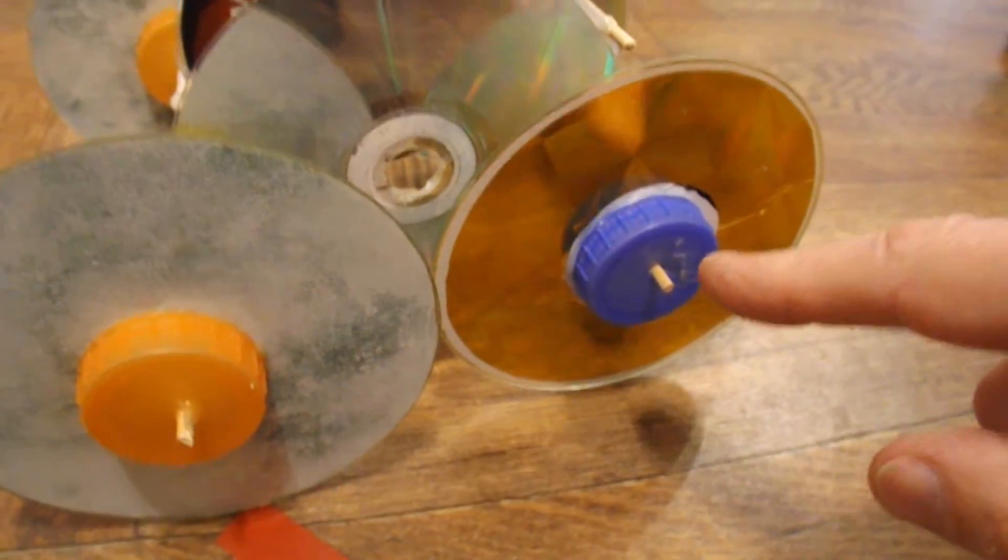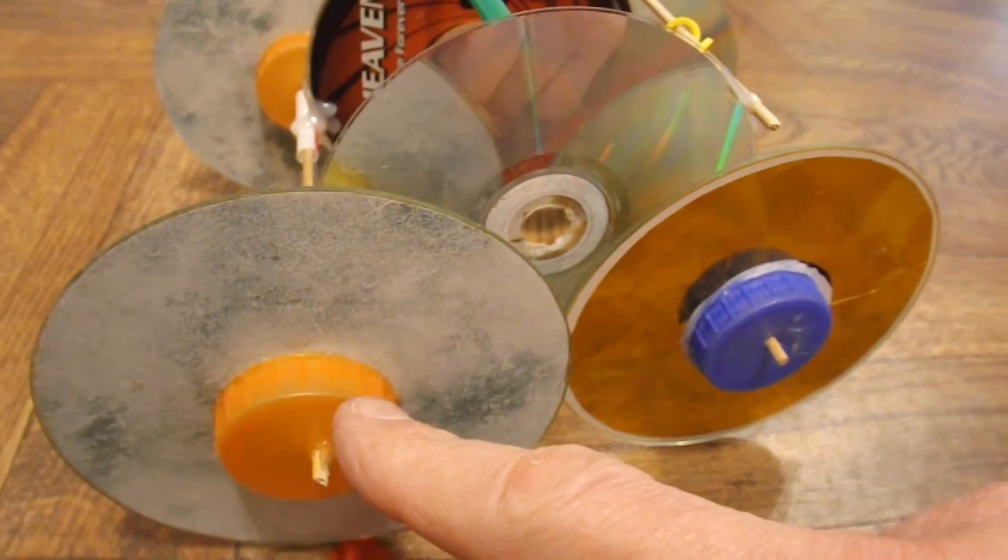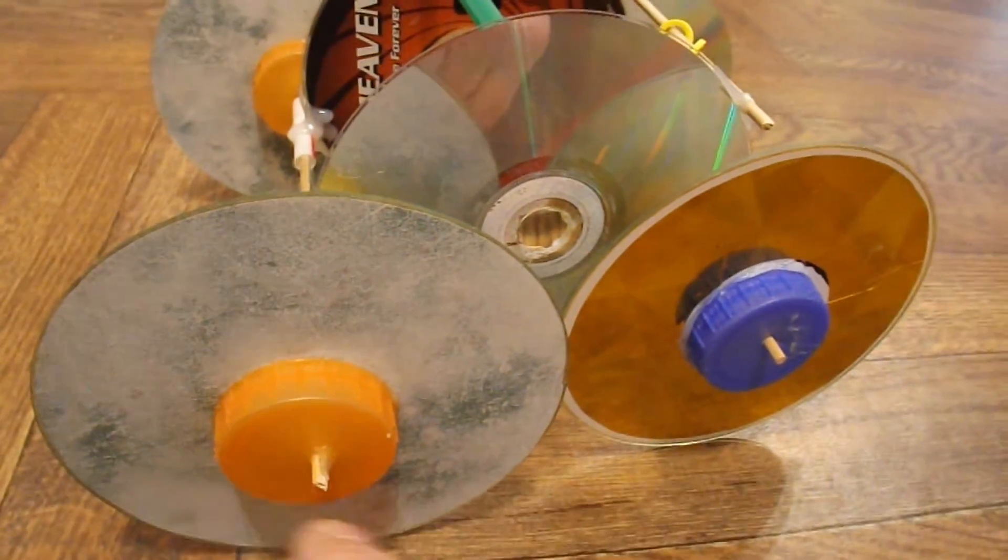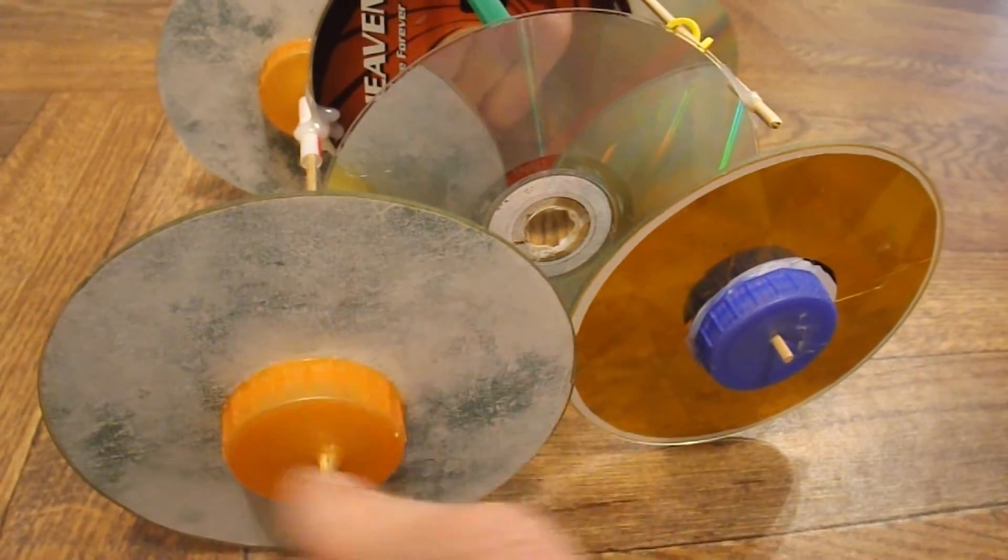In the video description there will be a link that takes you to a video where I show you how to make CDs like this. It's only plastic bottle tops hot glued to the middle of the CDs.